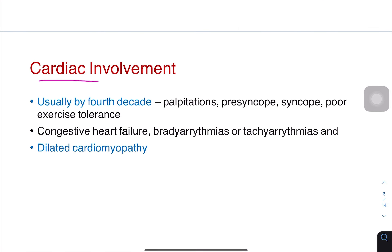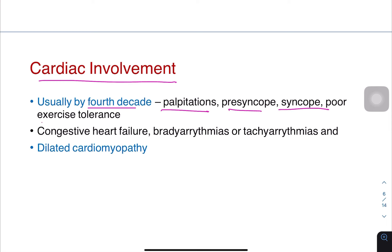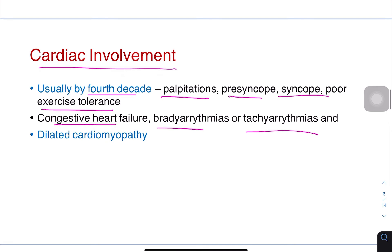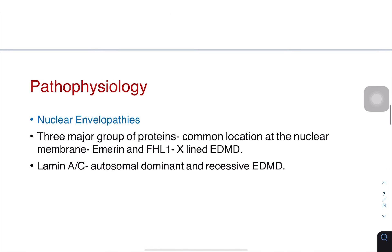The third feature is cardiac involvement, which occurs later in the course of the disease, usually by the fourth decade. Palpitations, presyncope, syncope, and poor exercise tolerance could be features. Congestive heart failure along with brady-arrhythmia or tachy-arrhythmia could be present, along with dilated cardiomyopathy.